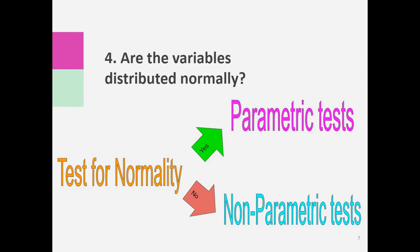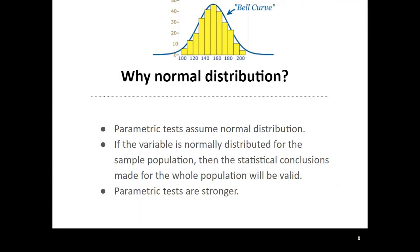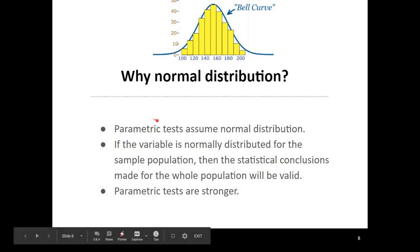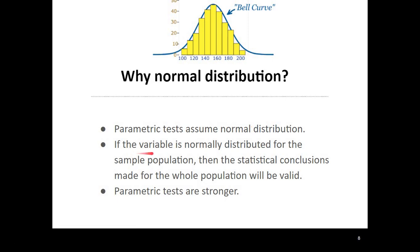The fourth important step is: are the variables normally distributed? This is important because when variables are normally distributed we apply a parametric test, and when they are not normally distributed we apply a non-parametric test. Parametric tests assume normal distribution. If the variable is normally distributed in the sample, the statistical conclusion for the whole population will be valid and more accurate, and parametric tests yield stronger results.